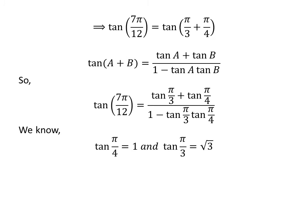We know the value of tangent of pi upon 4 is equal to 1 and tangent of pi upon 3 is equal to square root of 3. Plugging these values into the equation gives us tangent of 7 times pi upon 12 is equal to square root of 3 plus 1 upon 1 minus square root of 3.